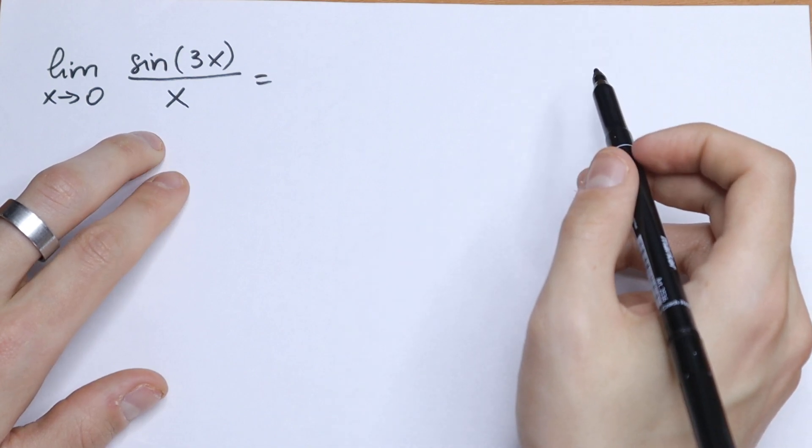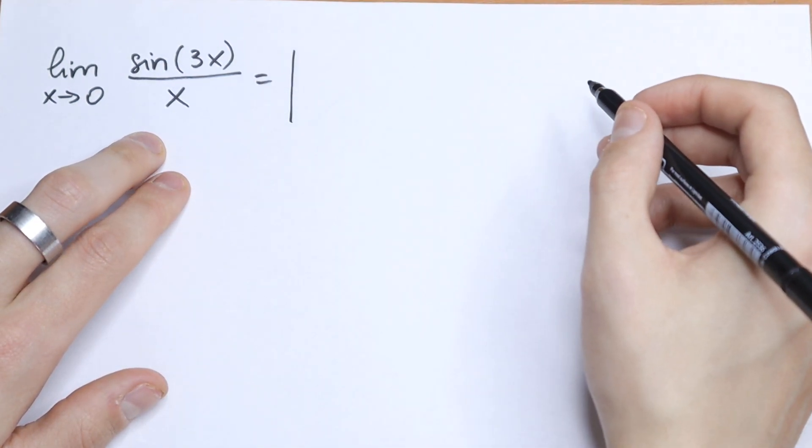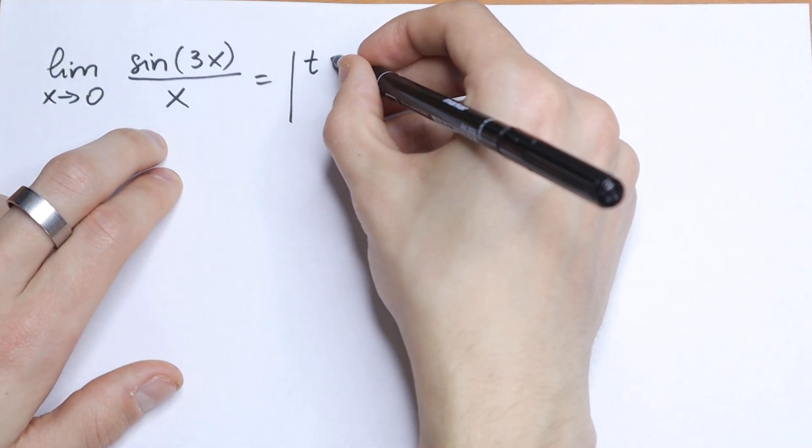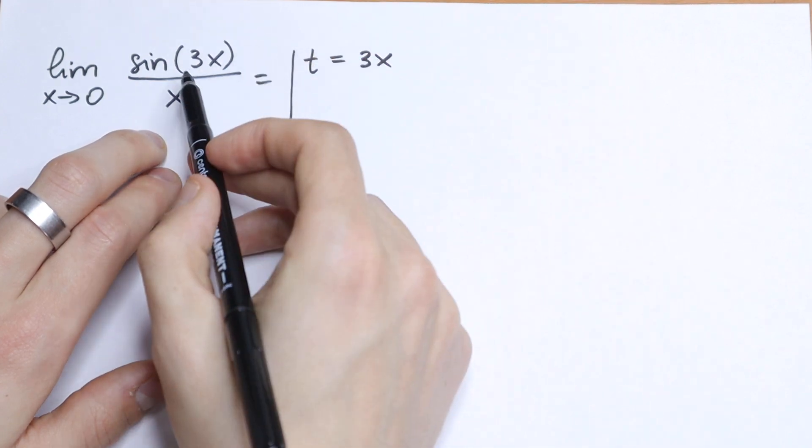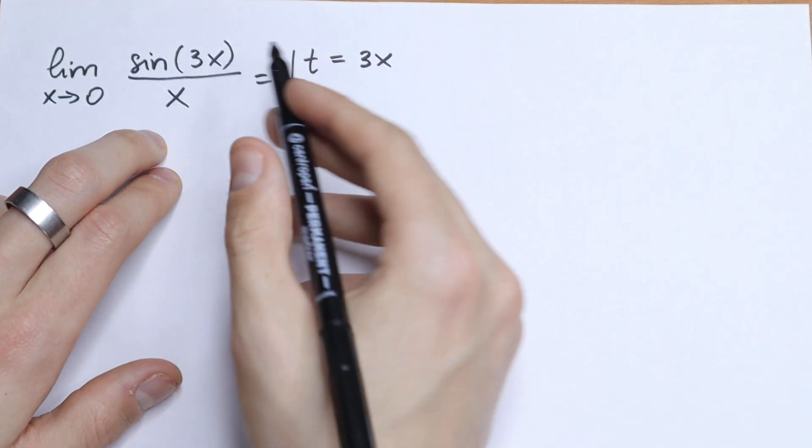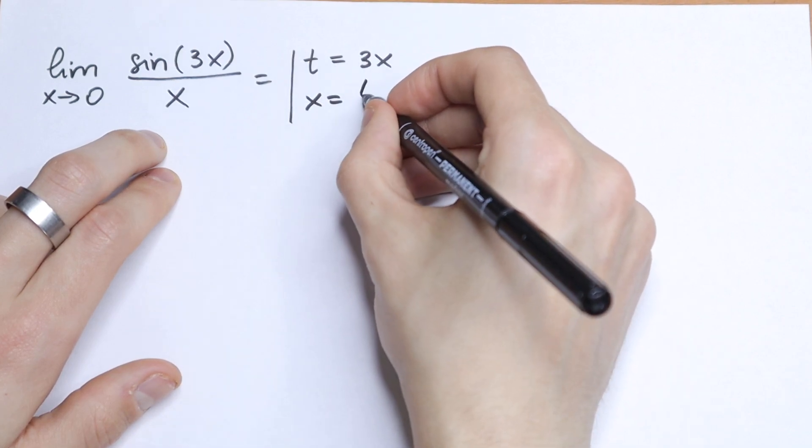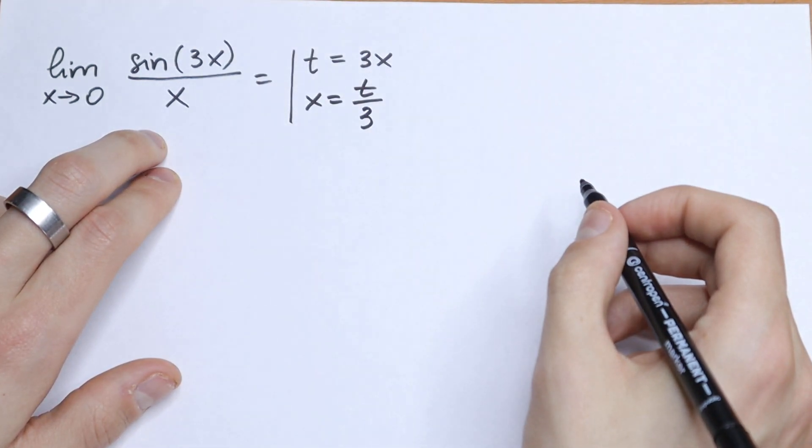So we need to use a substitution right here. Let's use a substitution. Let t equal to 3x. And from here, dividing both sides by 3, we will have that x equals t over 3.